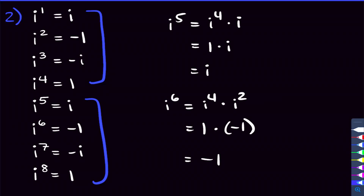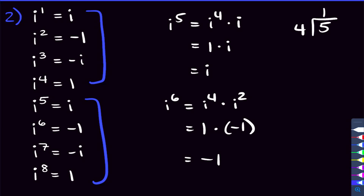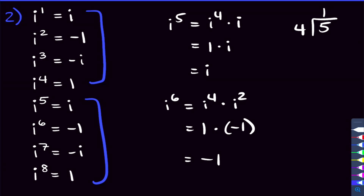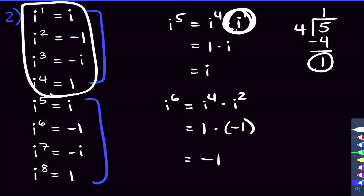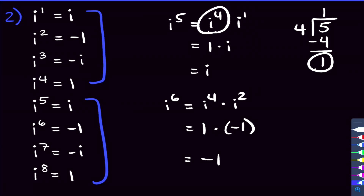What this means is that for higher powers of i, all we care about is the remainder when you divide the exponent by 4. For example, 5 divided by 4: 4 goes into 5 once with a remainder of 1. That remainder tells us what's left after taking out all the i to the fourths. Everything else is just a long list of i to the fourths, which are all 1.